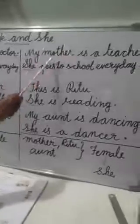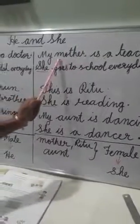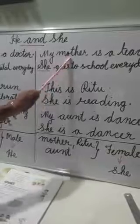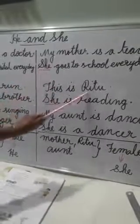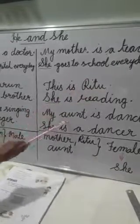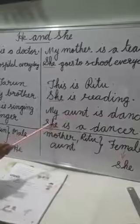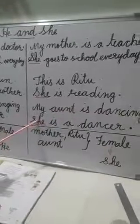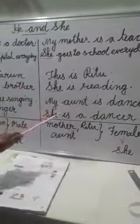Your mother is a woman. Instead of that woman, we will use 'she'. Ritu is also a girl — for that we will use 'she'. Aunt is also a woman — for that we will use 'she'. So Mother, Ritu, and Aunt are female persons, and for female persons we use 'she'.